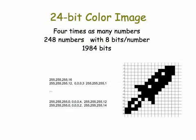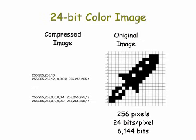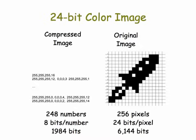We now have four numbers per run, giving 248 numbers total. In the first row we have white: 255, 255, 255, and there are 16 of them. In the second row: 12 whites — 255, 255, 255, 12 — followed by three blacks, followed by one white, and so forth. The original image is still 256 pixels, but now it's 24 bits per pixel, which comes to over 6000 bits. The compressed image is 248 numbers at 8 bits per number, which gives us 1984 bits — much less than 6000. We're getting better than 70% reduction, which is very good.